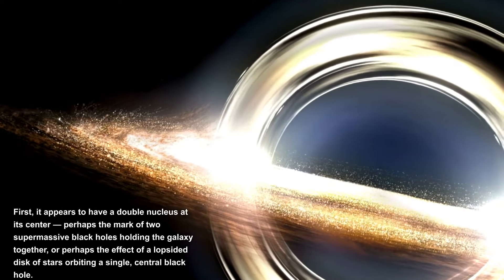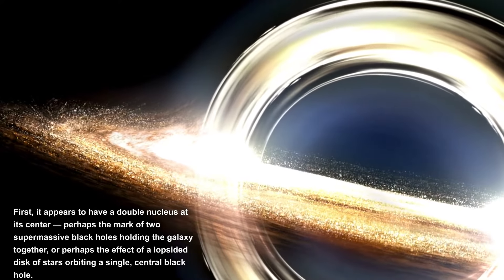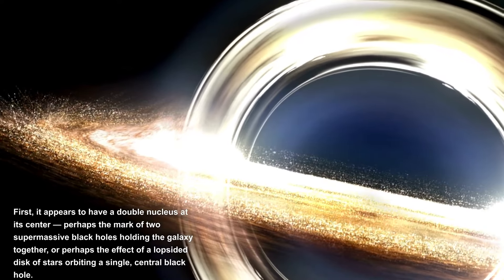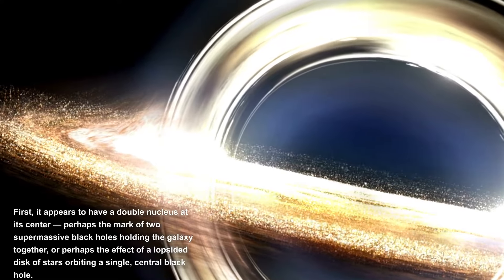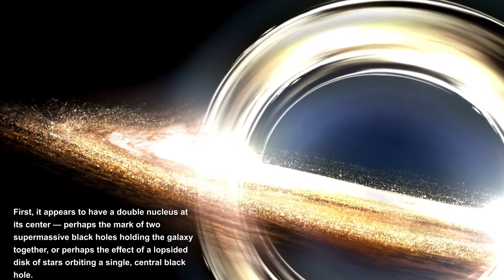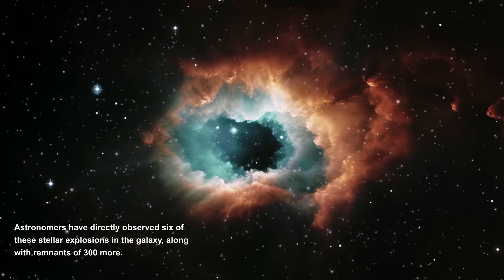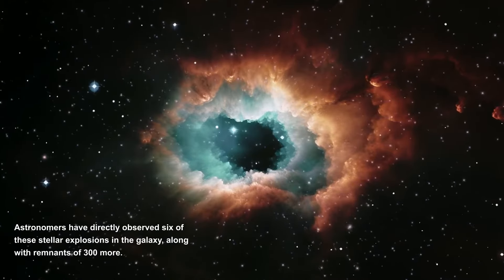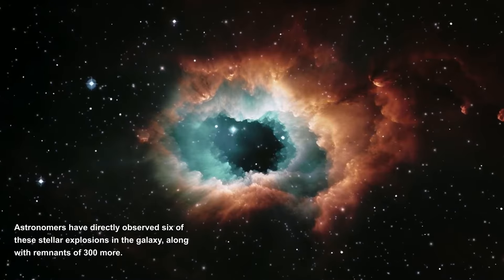First, it appears to have a double nucleus at its center, perhaps the mark of two supermassive black holes holding the galaxy together, or perhaps the effect of a lopsided disk of stars orbiting a single central black hole. Second, Messier 83 is a supernova supersite. Astronomers have directly observed six of these stellar explosions in the galaxy, along with remnants of 300 more.